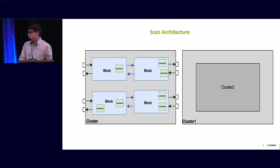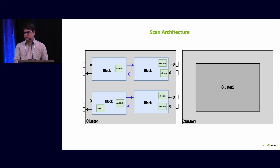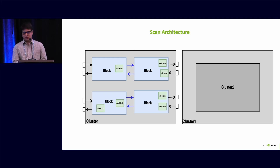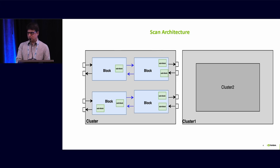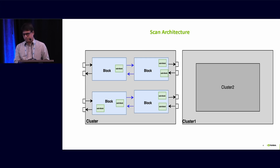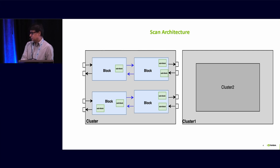This is the scan architecture we have at NVIDIA. We have a sublock, which is a soft micro, hard IP, or soft IP — it is a scan-inserted IP. On top of that we have a block, which contains the sublock, the functional logic, and all the DFT logic. On top of the block we have a cluster, which is a wrapper or DFT core. We perform ATPG at the cluster level. We also have a hierarchical cluster, shown on the right side of the picture.